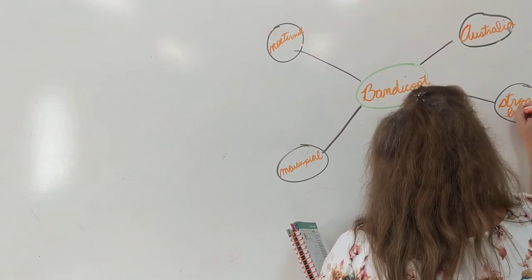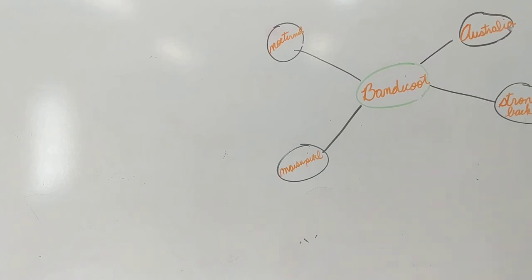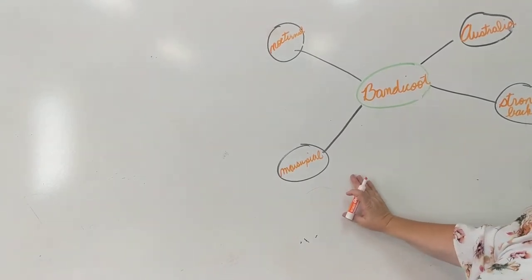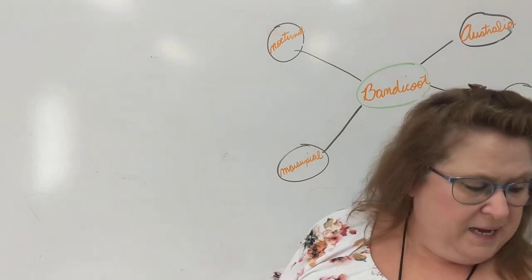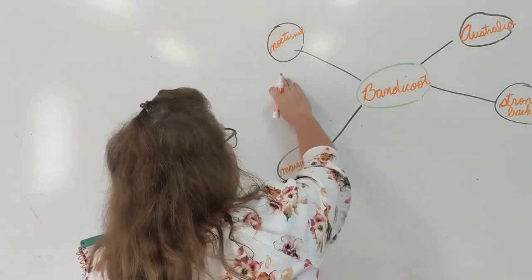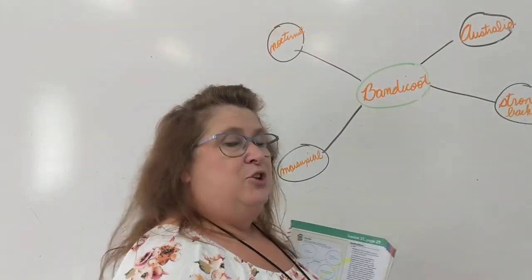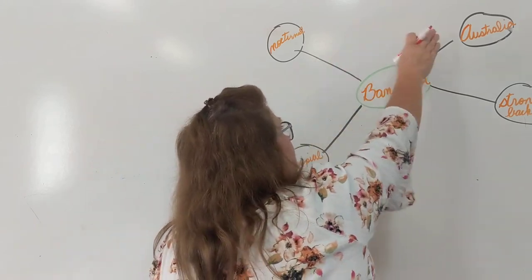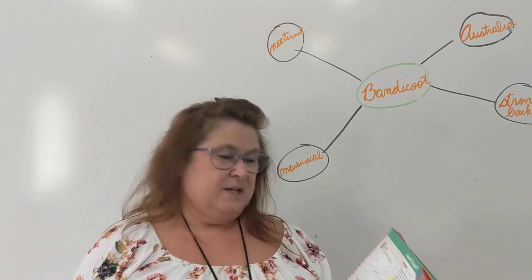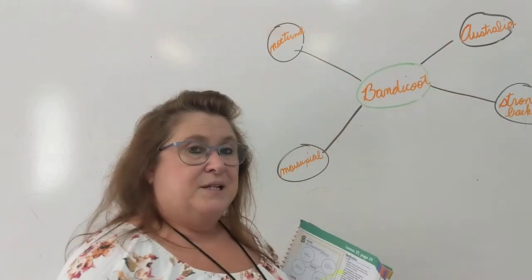If you thought of a different detail, you're free to write the details you remembered in your circles. Now, if you look at Think B, it says write one declarative sentence about bandicoots. So you're going to find one of your words — marsupial, nocturnal, Australia, strong back legs — and write a declarative sentence using the words in your bubbles. Number two says write one exclamatory sentence about bandicoots, so using words from one of your bubbles, write an exclamatory sentence.